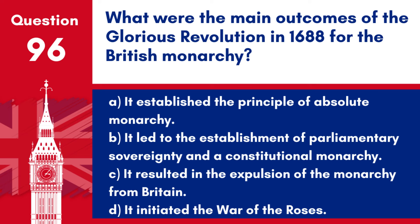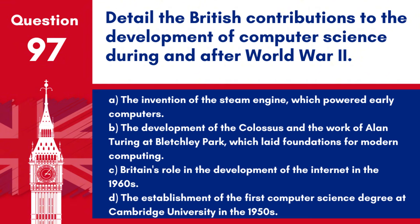Question 96. What were the main outcomes of the Glorious Revolution in 1688 for the British monarchy? Answer: b. It led to the establishment of parliamentary sovereignty and a constitutional monarchy. The Glorious Revolution of 1688 was significant for establishing parliamentary sovereignty over the monarchy, leading to the development of a constitutional monarchy in Britain.